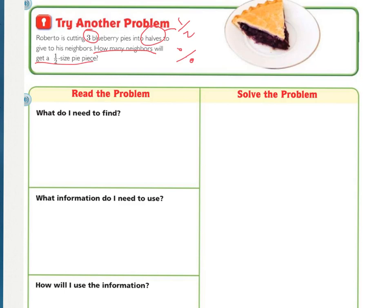You should have underlined how many neighbors will get a half-size pie piece, and that needs to go into this area right here. What do you need to find? And then you should have circled three blueberry pies. That's how many total he is baking or cutting. And then, what size is he cutting them into? He's cutting them into halves.